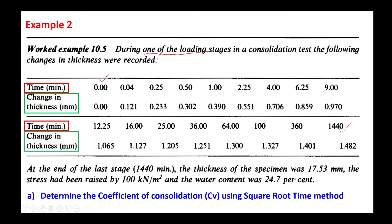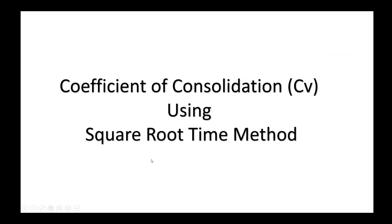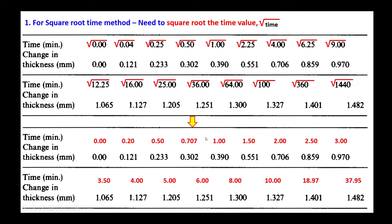Now we need to determine the coefficient of consolidation using the square root time method. First, we prepare the data: all time values given in minutes must be square-rooted. For example, square root of 0.04 gives 0.20; square root of 1 gives 1; square root of 4 gives 2; and square root of 1440 gives 37.95. Once this is complete, we are ready to plot the data.